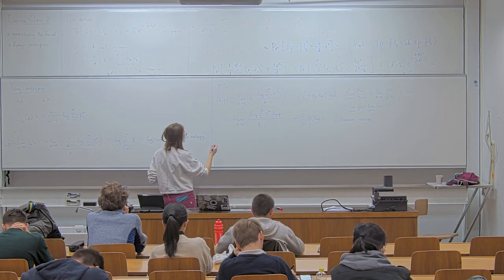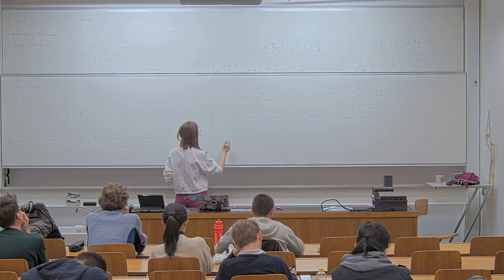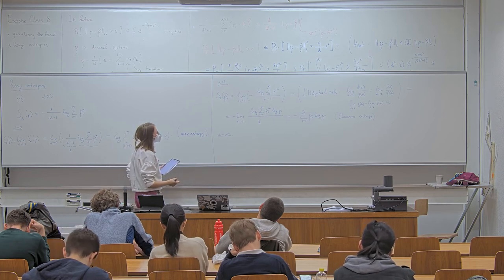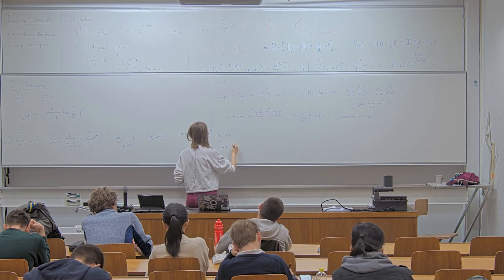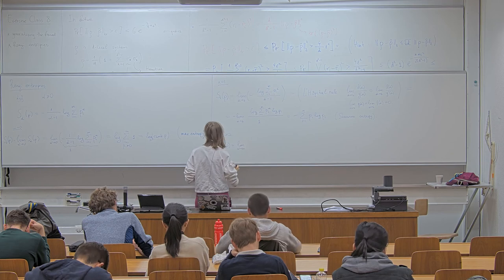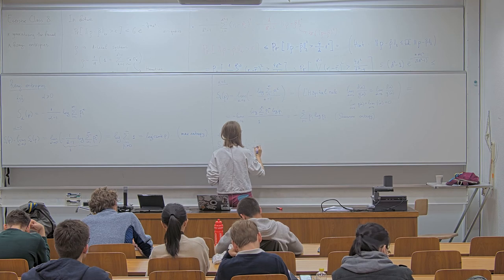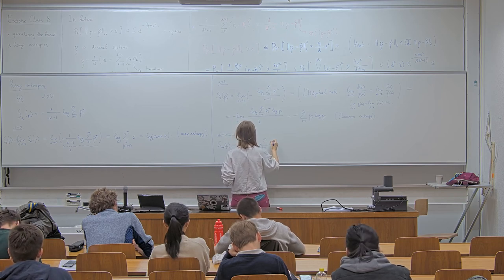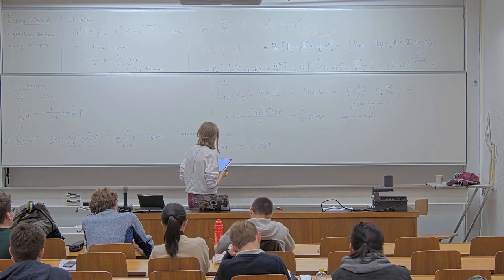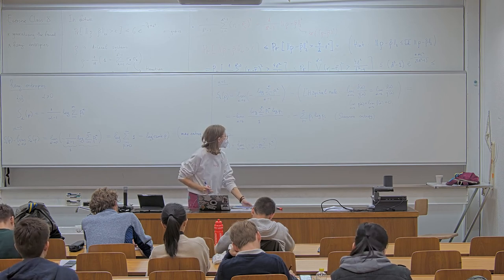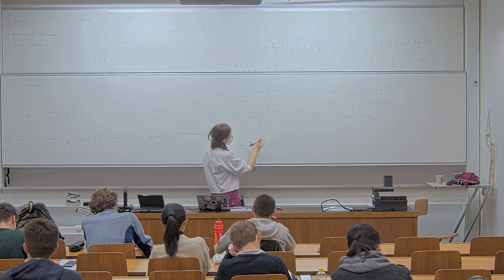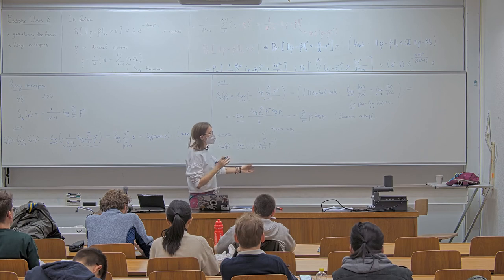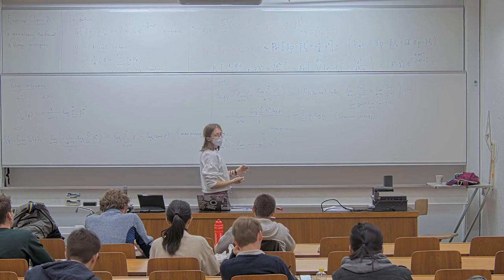The final limit is alpha going to infinity. S_infinity(p) is the limit as alpha goes to infinity of minus one over (alpha minus one) times the log of the sum of p_i^alpha. Without loss of generality, assume the maximum of the p_i's is p_1 — in other cases we can reshuffle since the expression is symmetric.